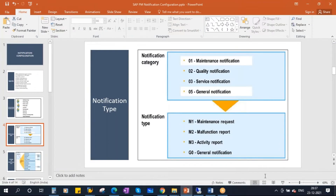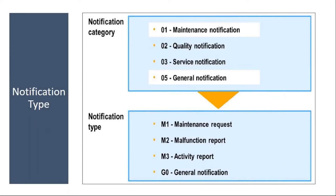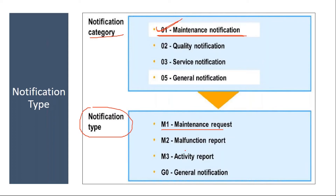All notification type notifications belong to the Plant Maintenance module. They belong to category 01 — this you cannot change, it is standard SAP. All the notifications created in PM module belong to category 01. The notification type says what type of notification you are creating — whether a maintenance request, a breakdown report, or a normal activity report. If you need a new notification type, you can configure it as per your requirement. Today we will configure notification type S1, or K1.